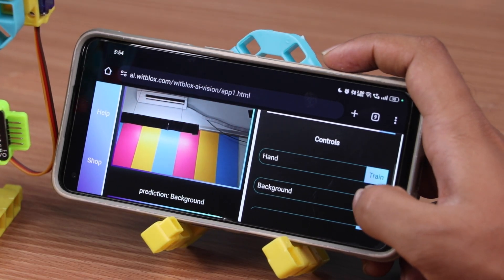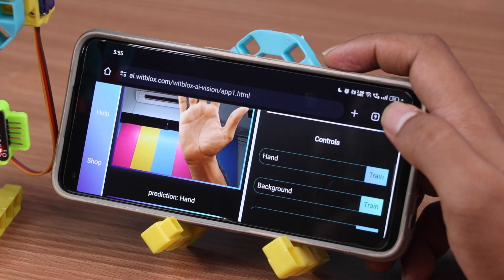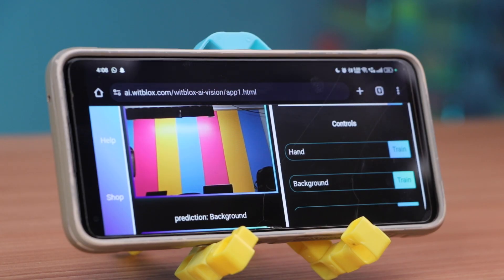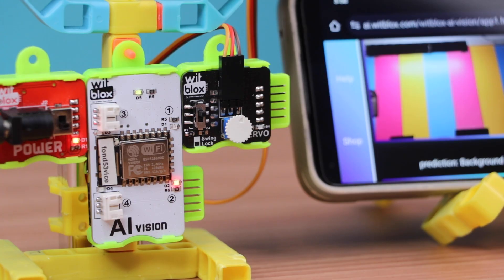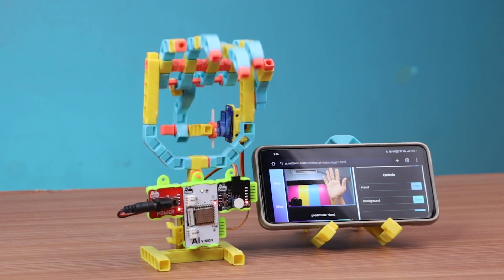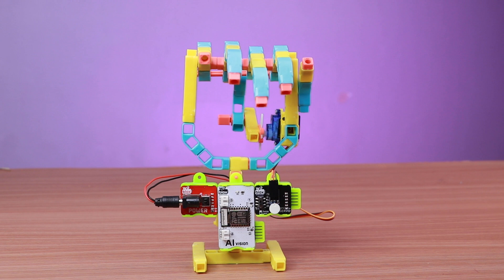Now when the hand is visible on the camera, the prediction on the AI site will show hand and the mechanism moves like a person greeting us. When you show the background it will predict background and stop the mechanism. Along with the prediction, the light on the respective port of the AI blocks will turn on. At a time, AI can detect only one object and trigger one output port. Our AI hand is now ready.